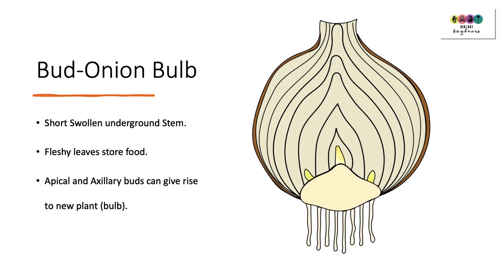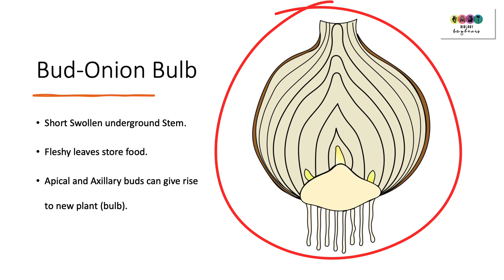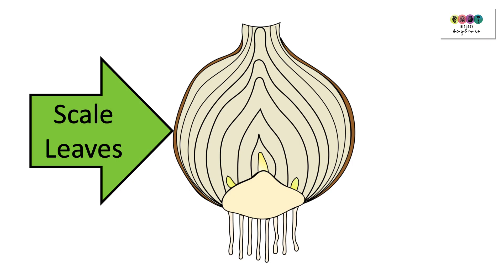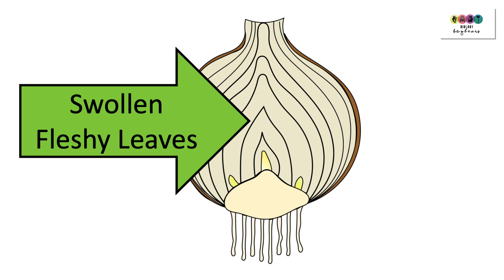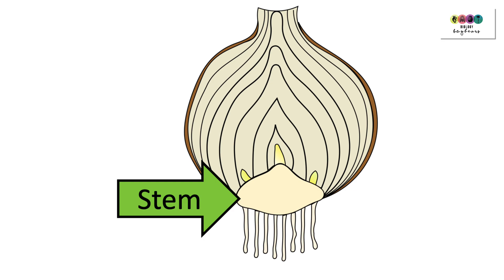An example of natural vegetative propagation involving the bud is the formation of the onion bulb. An onion bulb is a short swollen underground stem with fleshy leaves which store the food, and the apical and axillary buds can give rise to new plants and new bulbs. It's important that you can draw a good diagram of the onion with the following labels: scale leaves, swollen fleshy leaves where food is stored, lateral buds, apical bud, the reduced stem, and the roots.